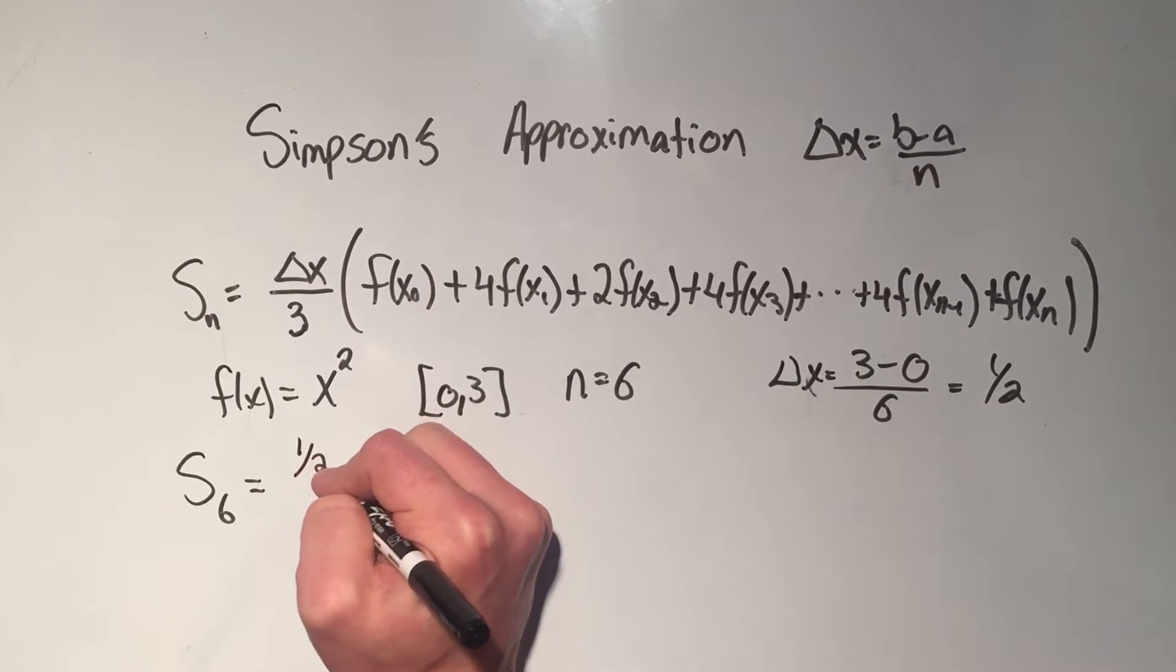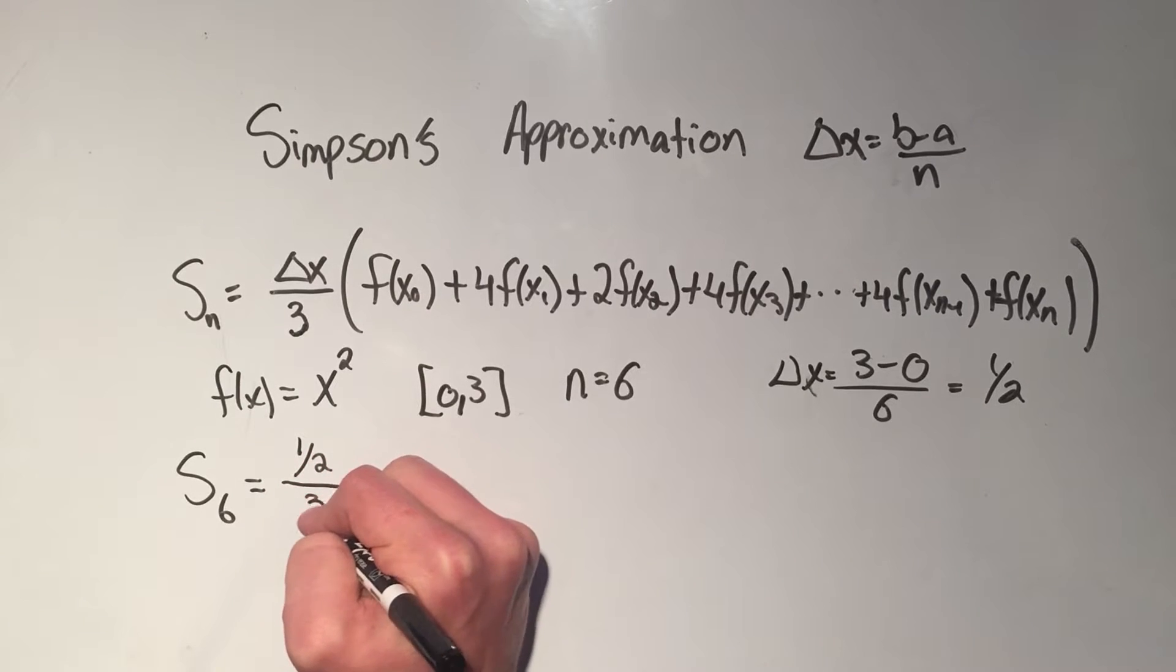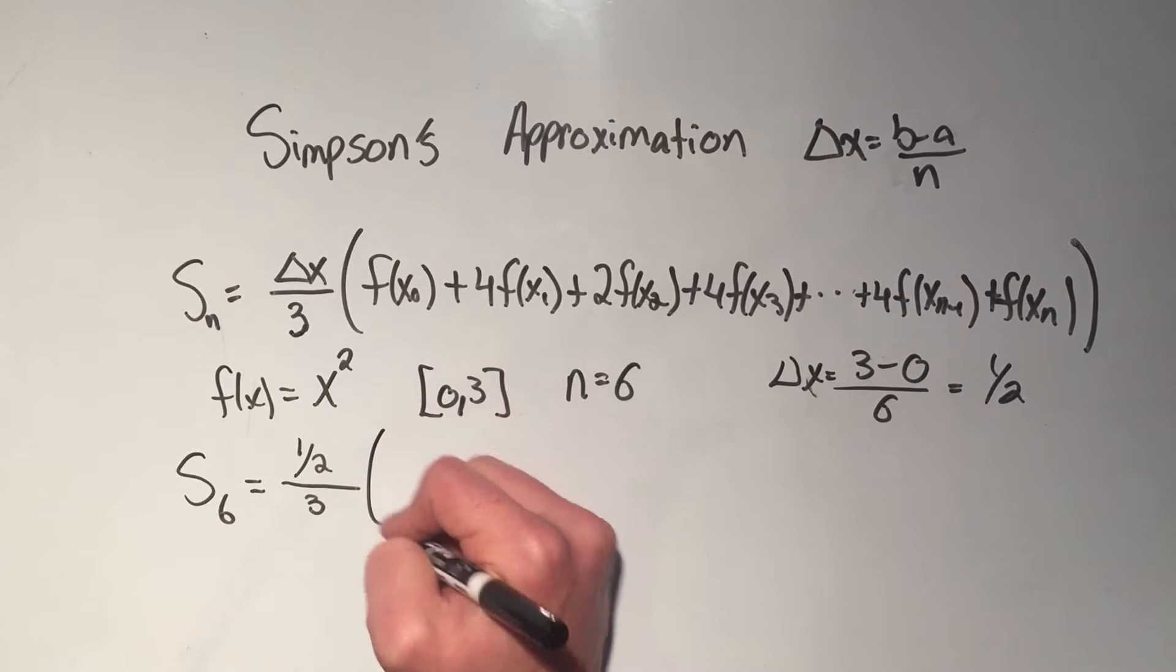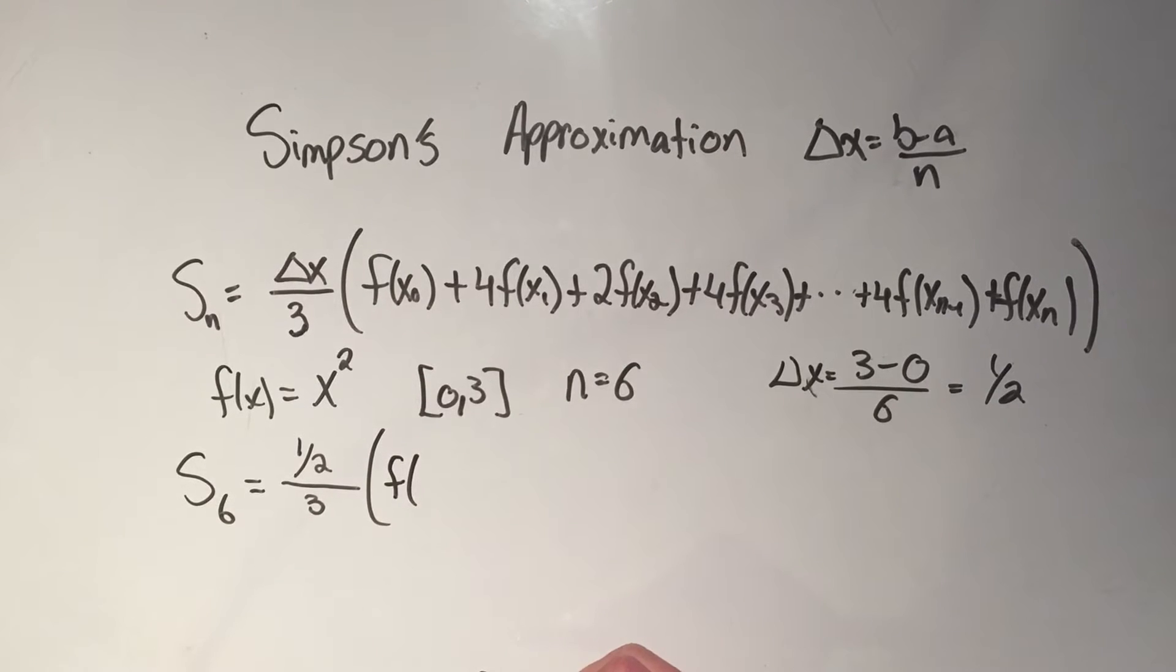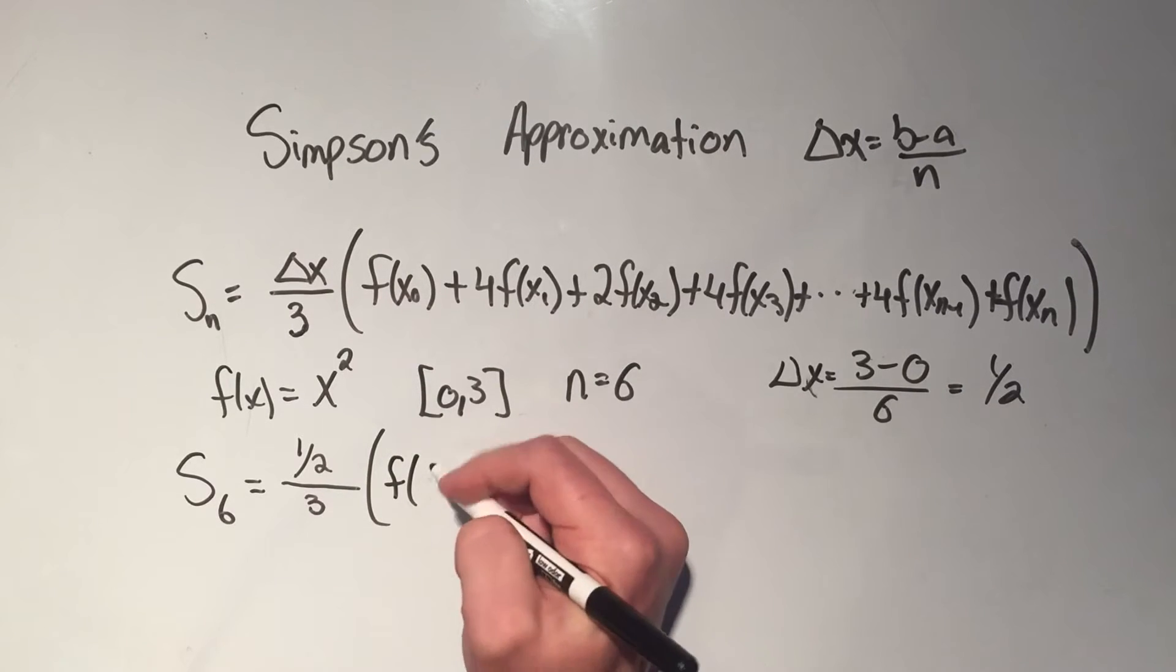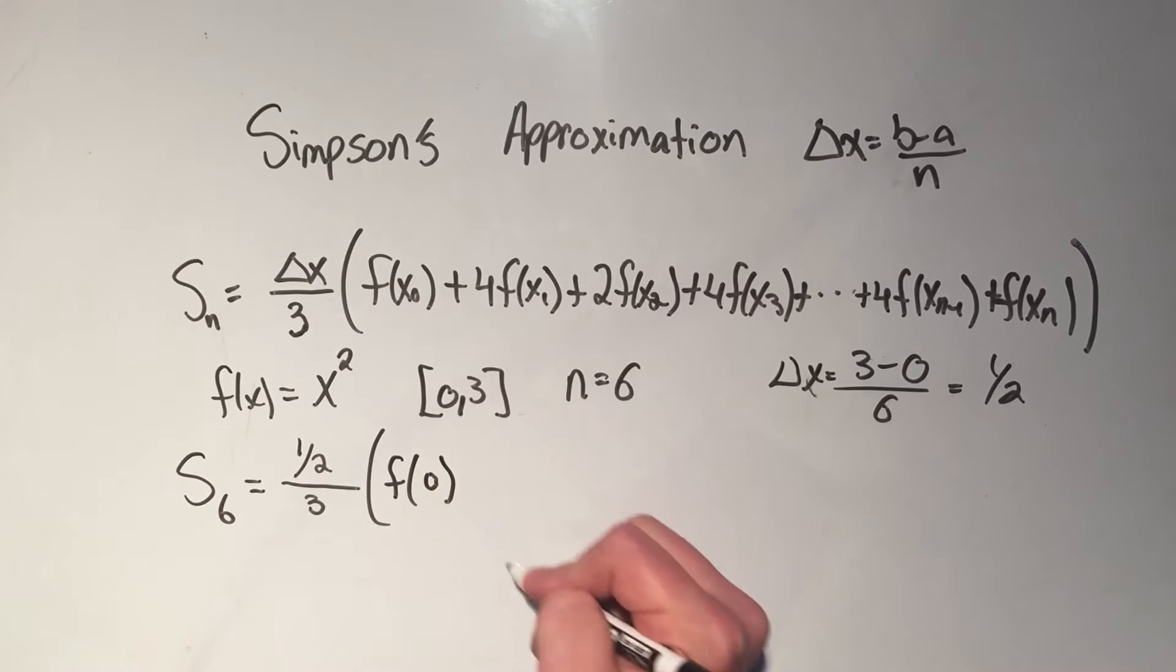So I do delta x, which is 1 half, over 3. And then I have to do f of x0, that's the first point, so that's a, so that's 0, f of 0.